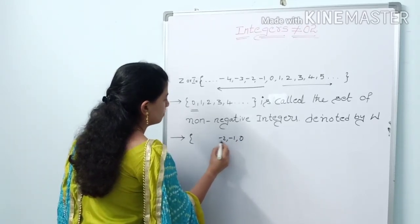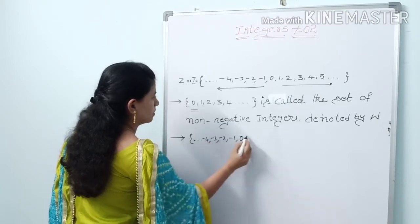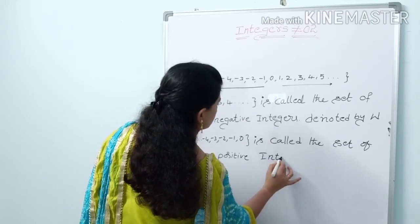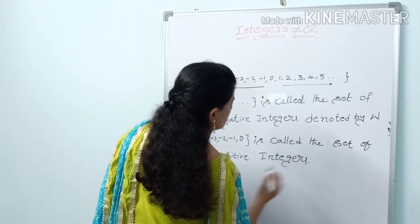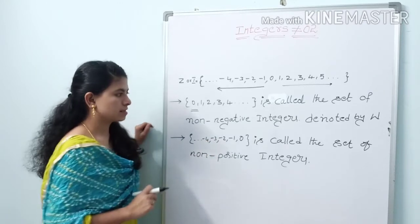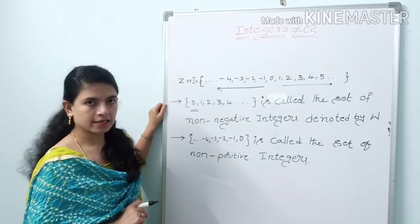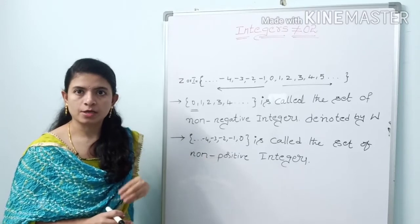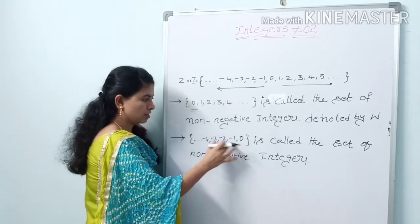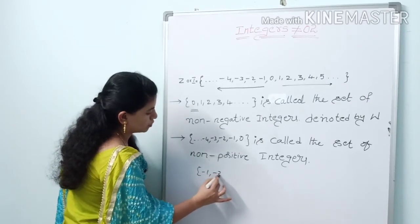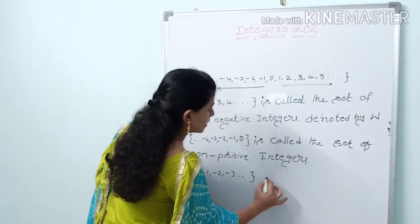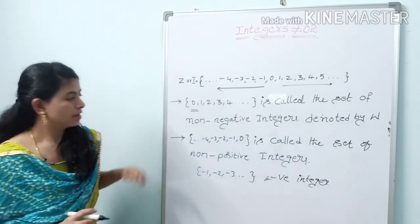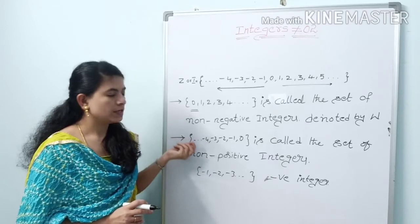The set {0, minus 1, minus 2, minus 3, minus 4, ...} is called the set of non-positive integers. As stated above, 0 is there, and 0 is neither positive nor negative. So if 0 is not there, the set {minus 1, minus 2, minus 3, ...} is called negative integers. If 0 is there, we call it the non-positive integer set.